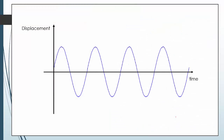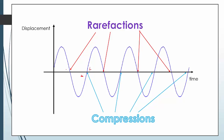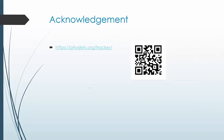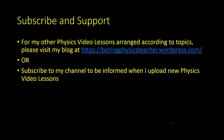So using the simulation we can conclude: for a compression, the displacement goes from negative to positive — the compression is pushing the particle forward in the direction of wave travel. For a rarefaction, it is the opposite — the displacement goes from positive to negative. Please subscribe and support my channel. For other physics video lessons arranged by topic, please visit my blog at followingthephysicsteacher.wordpress.com.